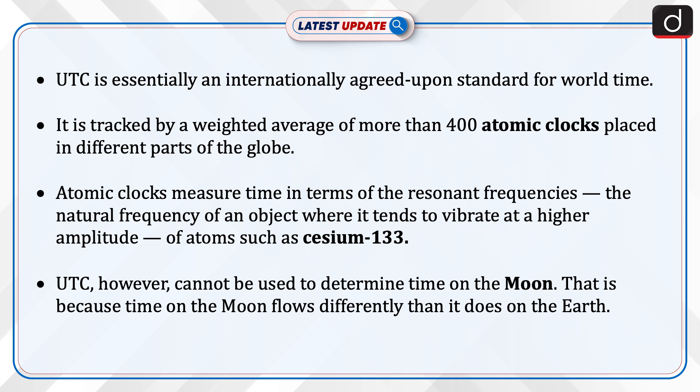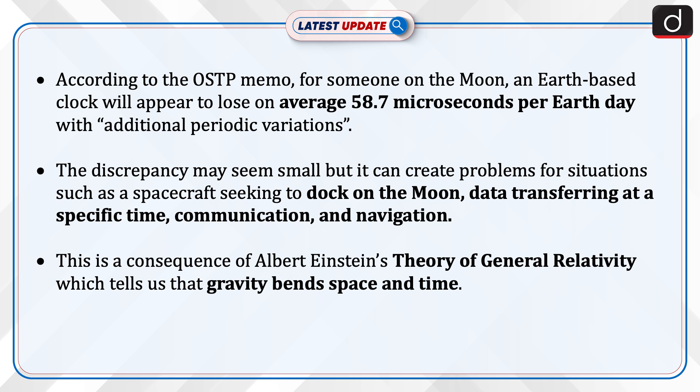That is because time on the Moon flows differently than it does on the Earth. According to the OSTP memo, for someone on the Moon, an Earth-based clock will appear to lose an average of 58.7 microseconds per Earth day, with additional periodic variations. The discrepancy may seem small, but it can create problems for situations such as a spacecraft seeking to dock on the Moon, data transferring at a specific time, communication, and navigation.